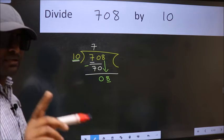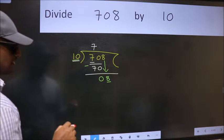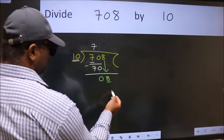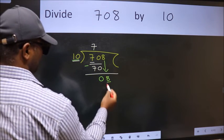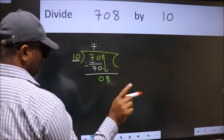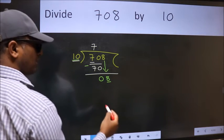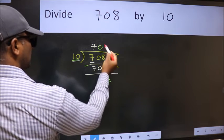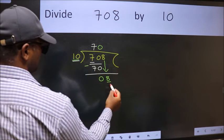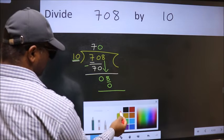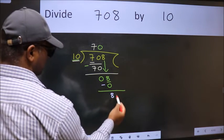Instead of that, what we should think of doing is, which number should we take here. If I take 1, we will get 10. But 10 is larger than 8. So what we do is, we take 0. Now we subtract. We get 8.